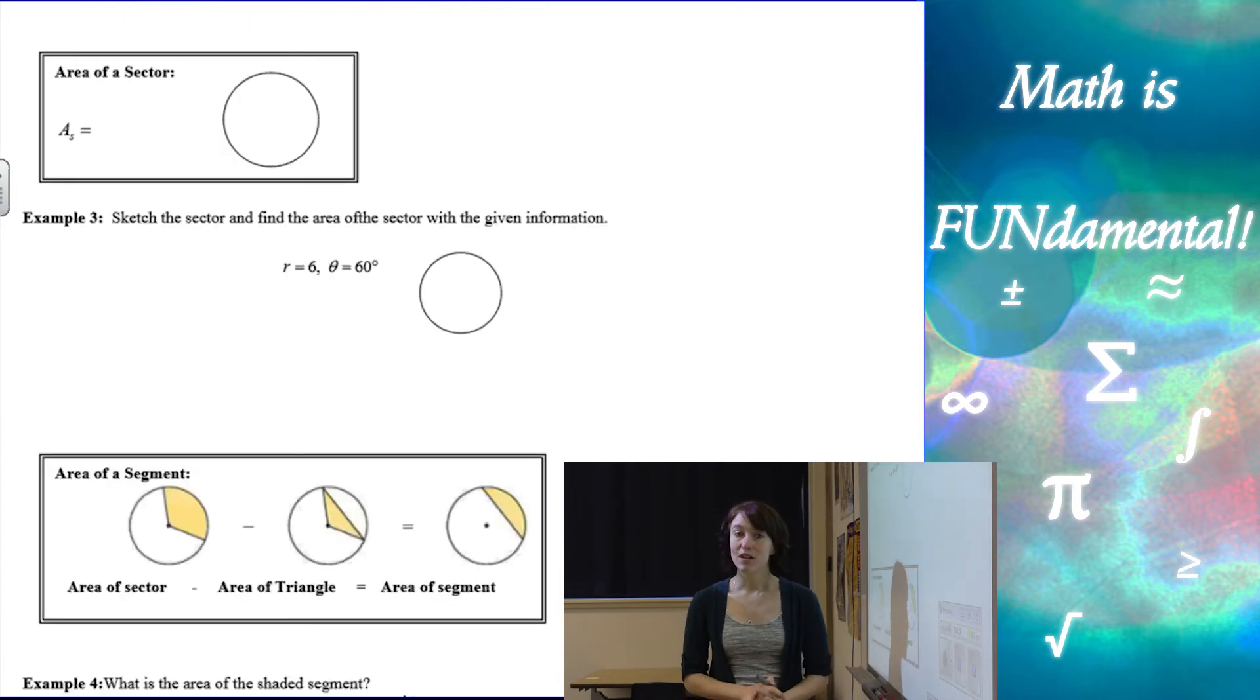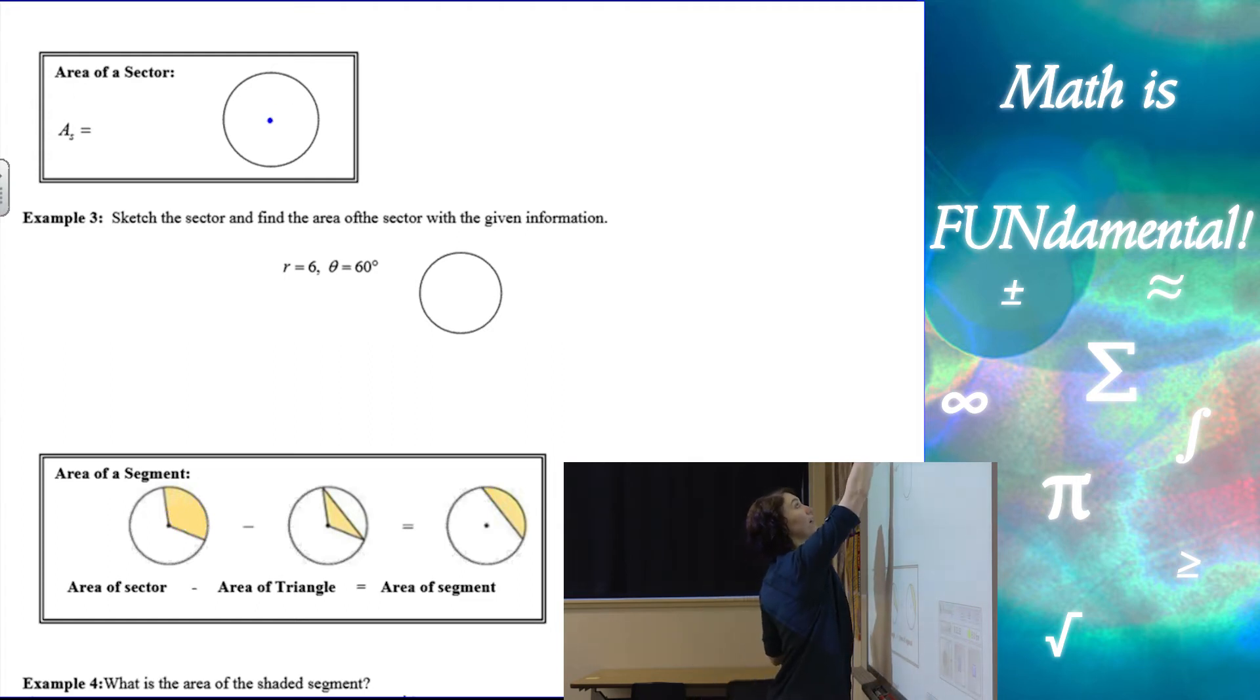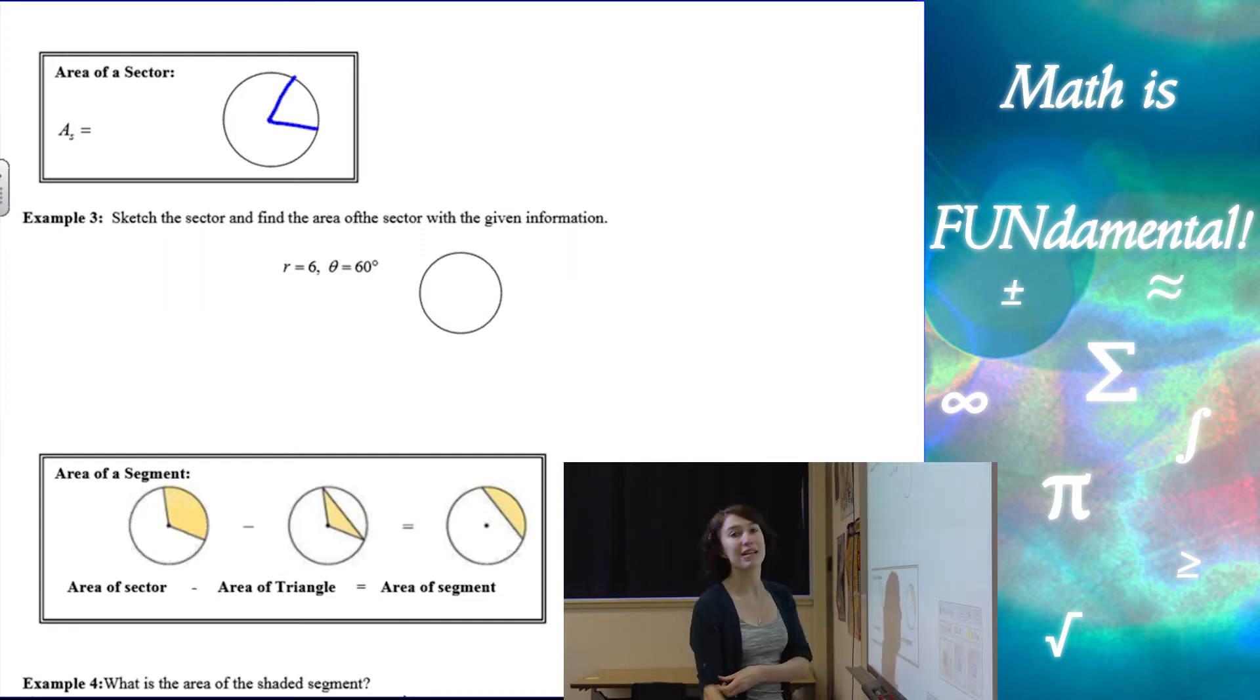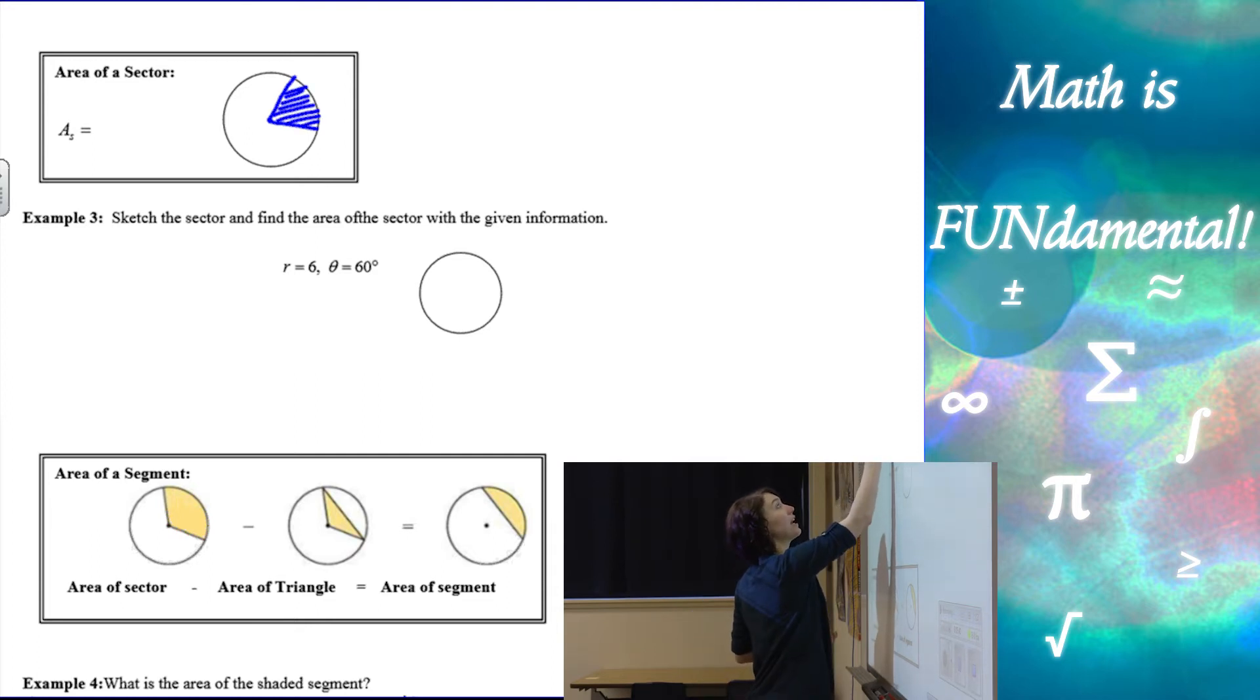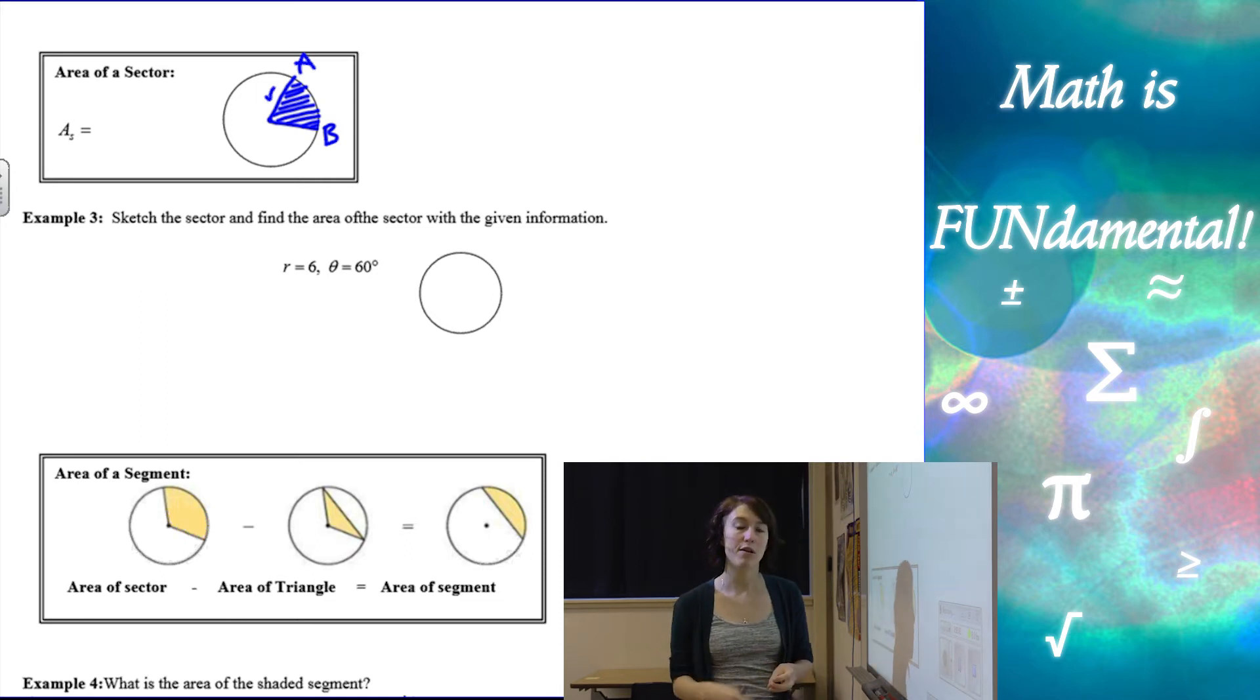Alright, so next we're going to look at area of a sector of a circle. So a sector of a circle is when we're finding the area of just one kind of slice of the circle. You can think of it like a piece of the pie. So if I want just the area inside of this sector of the circle, what we're going to do, so let me put an a, b, and then of course this will be my radius, we're going to have to figure out what fraction of the area we're looking at.